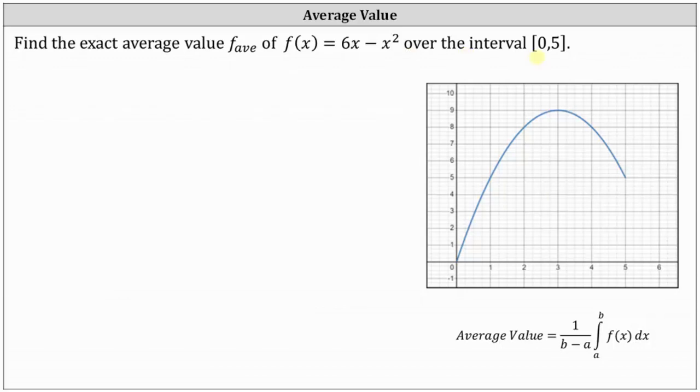When the closed interval is from a to b, the average value is equal to 1 divided by the quantity b minus a times the definite integral from a to b of f of x dx.